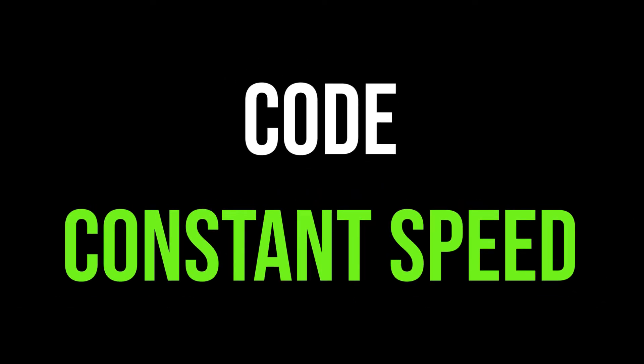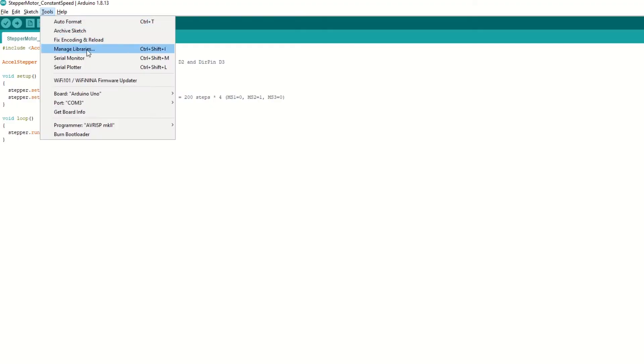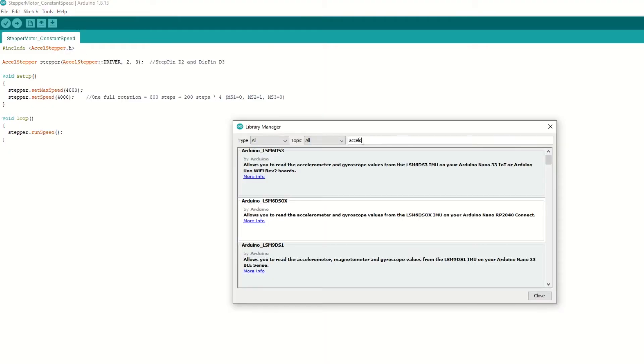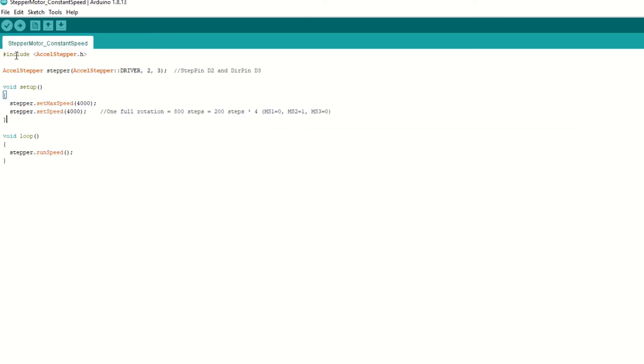First let's take a look at code to rotate stepper motor with constant speed. First we need to install the AccelStepper library. Go to Tools and Manage Library, search for AccelStepper library and install it. Inside code we need to include AccelStepper library, then create AccelStepper object and pass driver mode and step and direction pins. In our case D2 and D3 respectively.